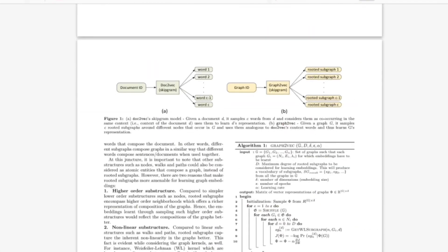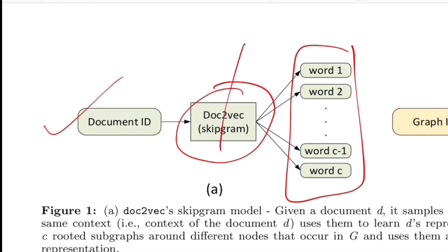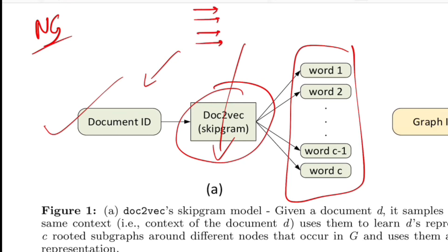Visually, doc2vec works like this: you have some document — a sentence or paragraph — that goes into a skip-gram model, and at the output you get a softmax distribution across the entire vocabulary. The model is trained so that the words output with probability close to 1 are those that actually appear in document d. People have proposed optimization schemes on top of this such as hierarchical softmax and negative sampling. For both doc2vec and graph2vec, the authors employ negative sampling: instead of a softmax output layer, you define sigmoid units based on vocabulary size, doing 0-1 classification per word.